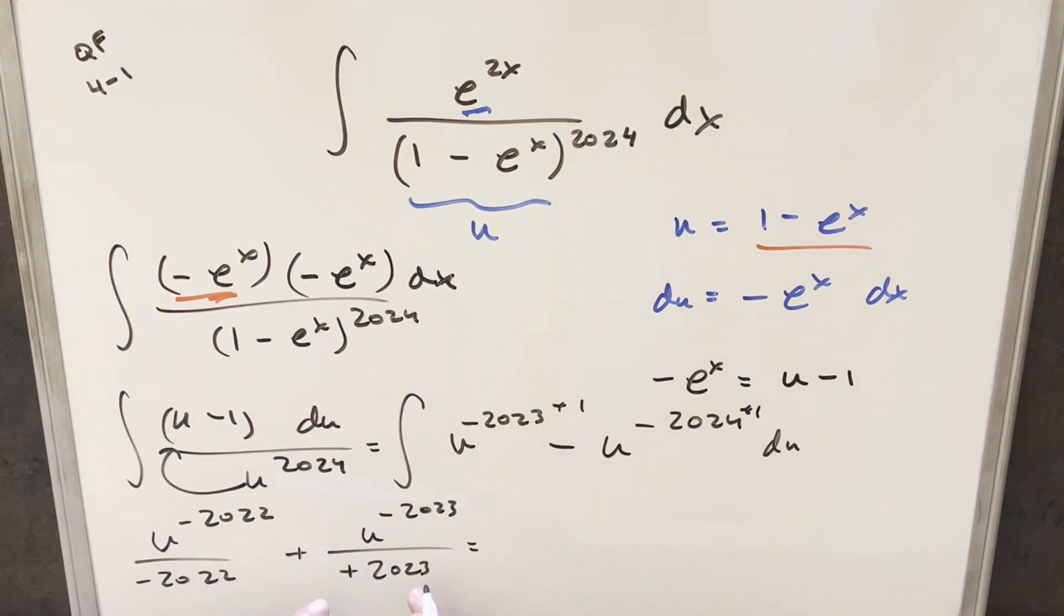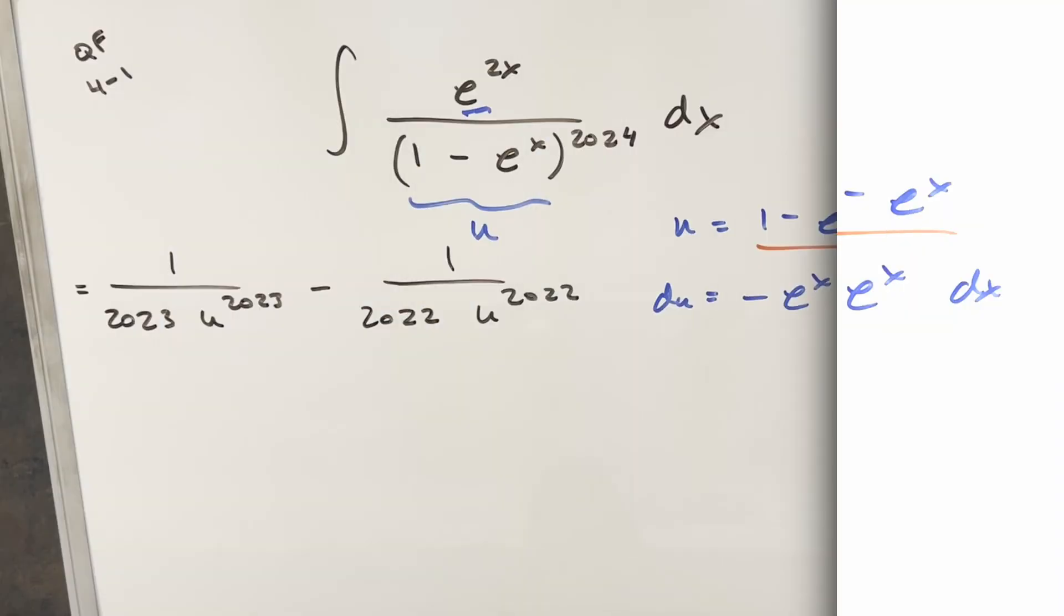Here we can do minus times minus and make these pluses. And then from here, I'll just kind of do a rewrite, reorder everything, bring the minus exponents into the denominator. So I can write this as 1 over 2023 u to the 2023, minus 1 over 2022 u to the 2022.